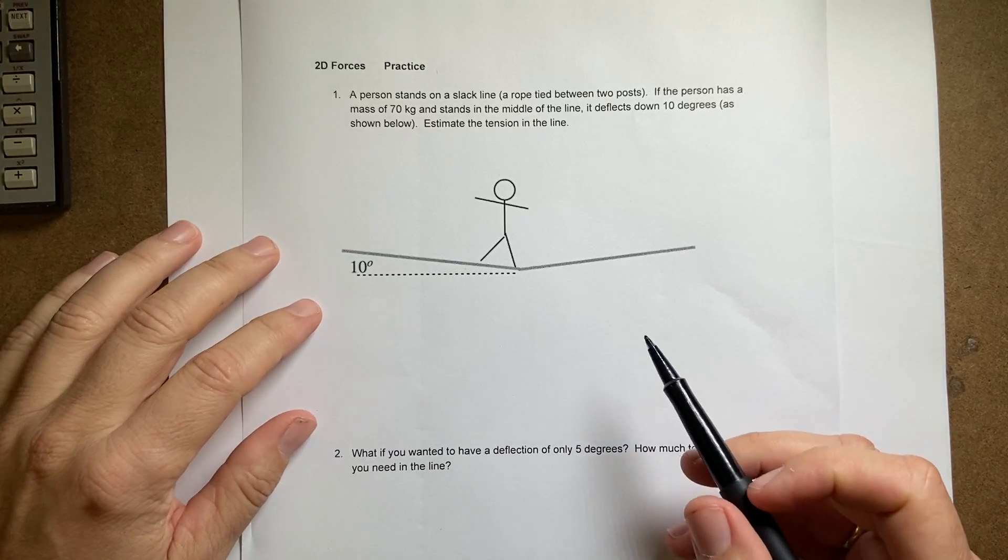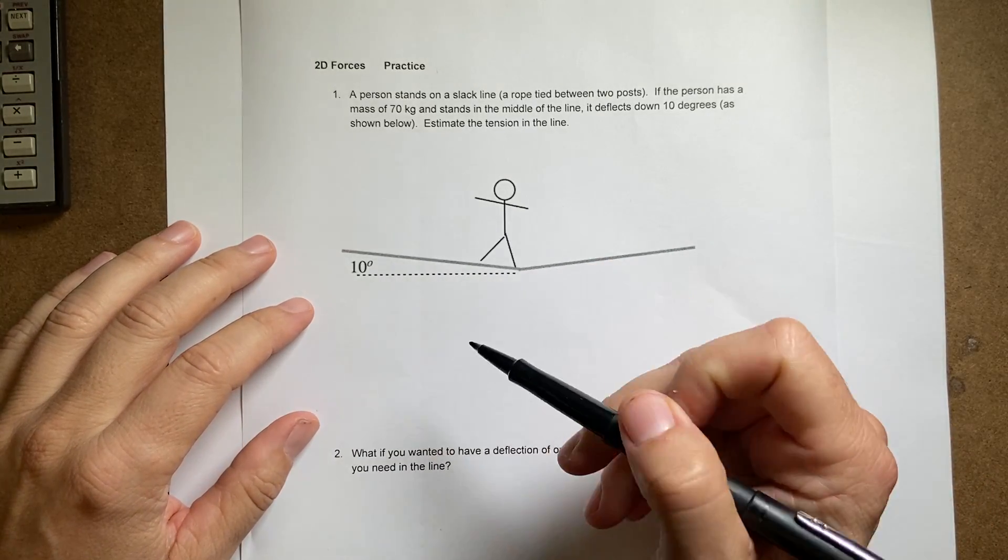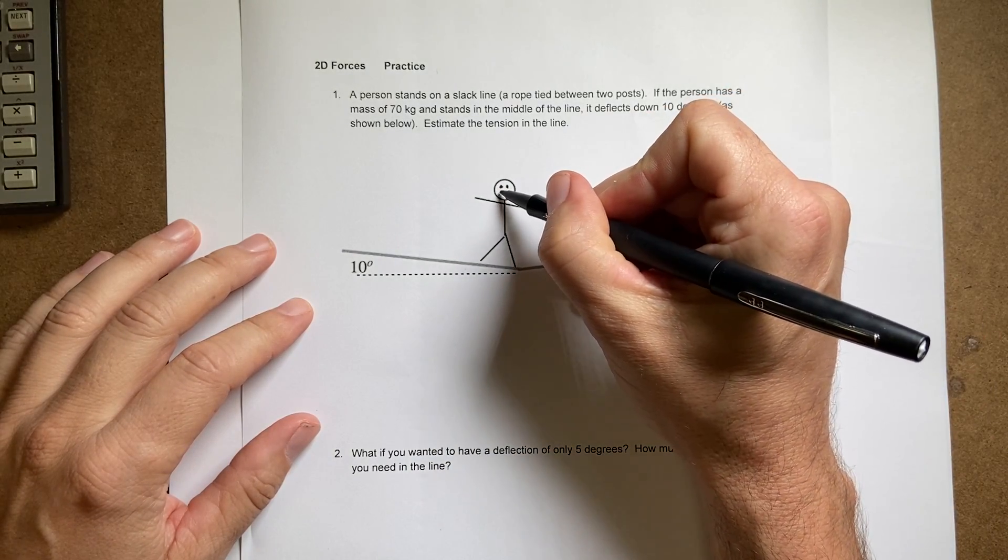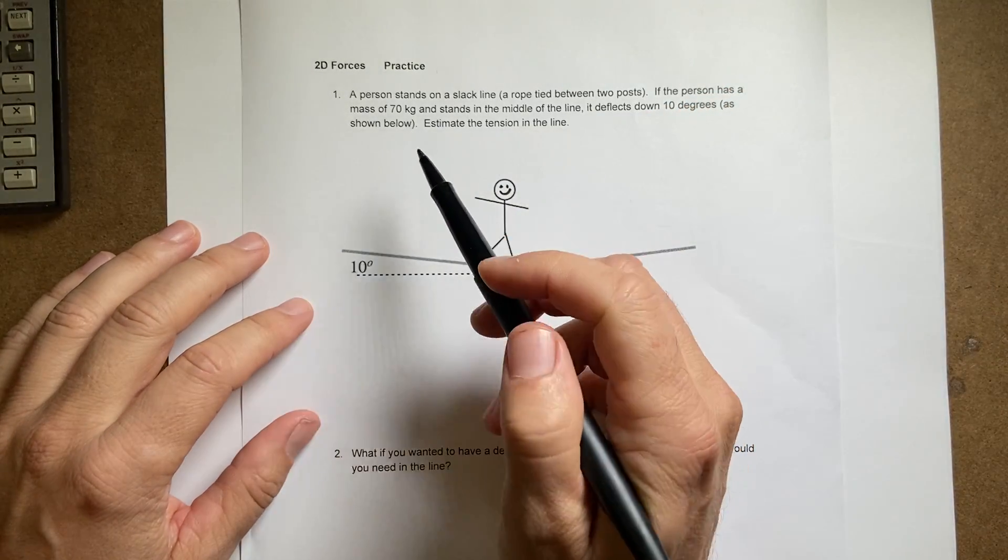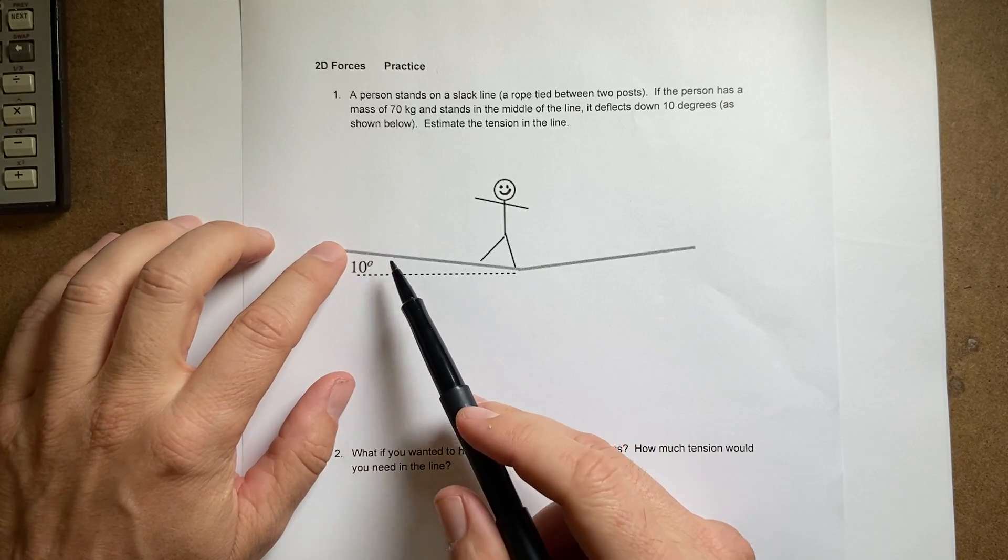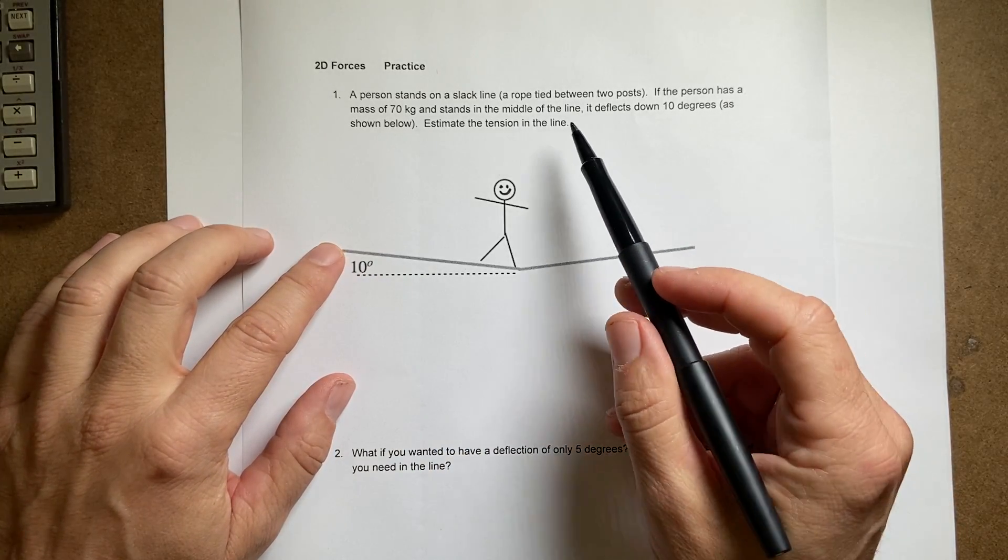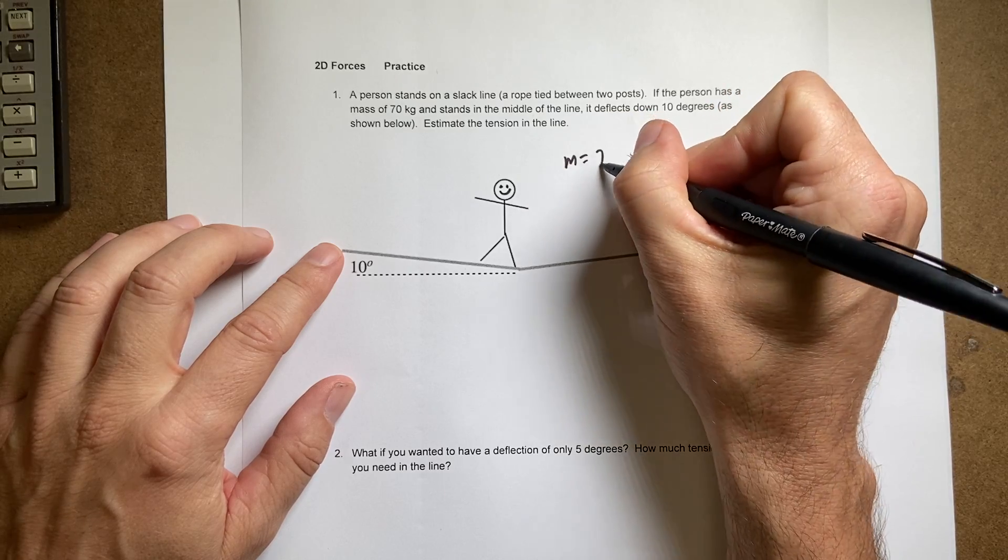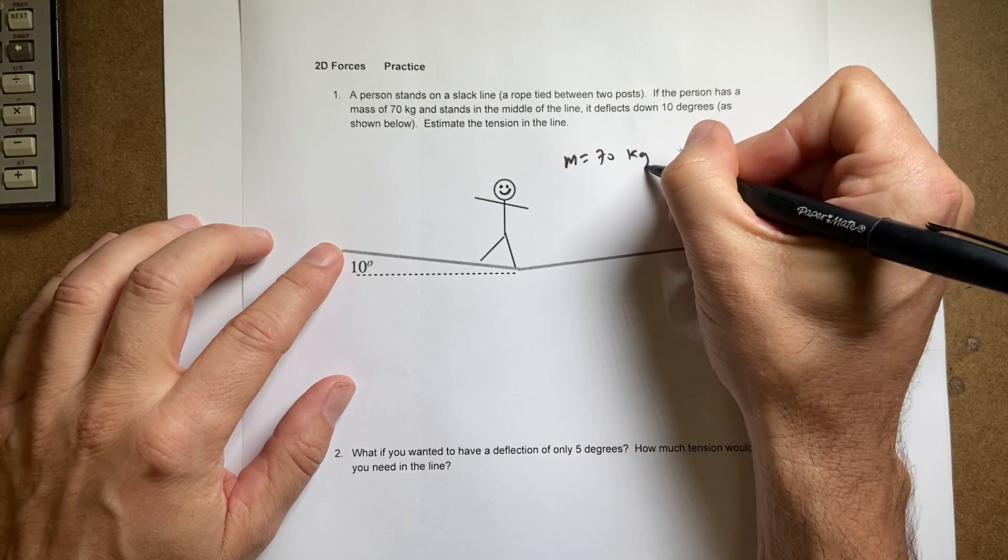Okay, let's do a physics problem. So I made this one up myself and I even drew the picture of the stick figure guy, right? So a person on a slackline right there, and the person has a mass of 70 kilograms. I'm going to go and write that down even though it's right there. It just helps you kind of organize stuff.